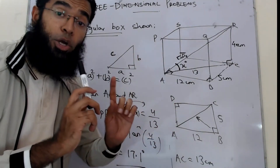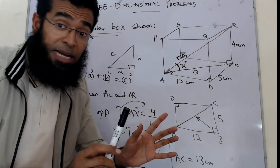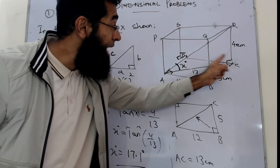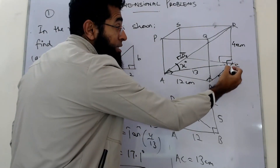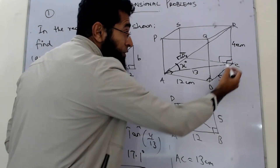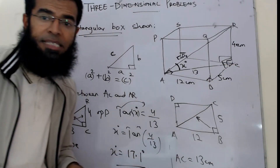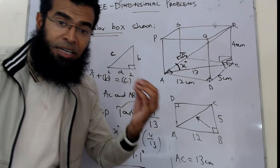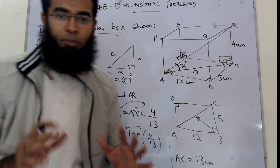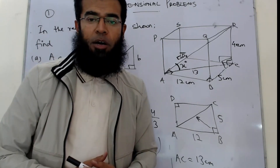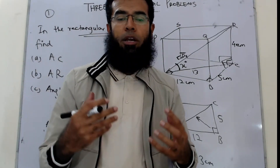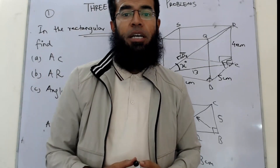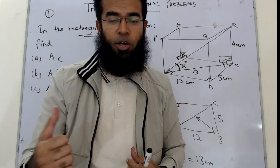That's how you solve any three-dimensional trigonometry problem. Look for right-angled triangles: the height with the base is 90 degrees, height with the length of the floor is 90 degrees, height with the width of the floor is also 90 degrees. Pick the correct trigonometric ratio and solve. I hope you've learned how to approach 3D problems — please comment, subscribe, share, and like for further videos.